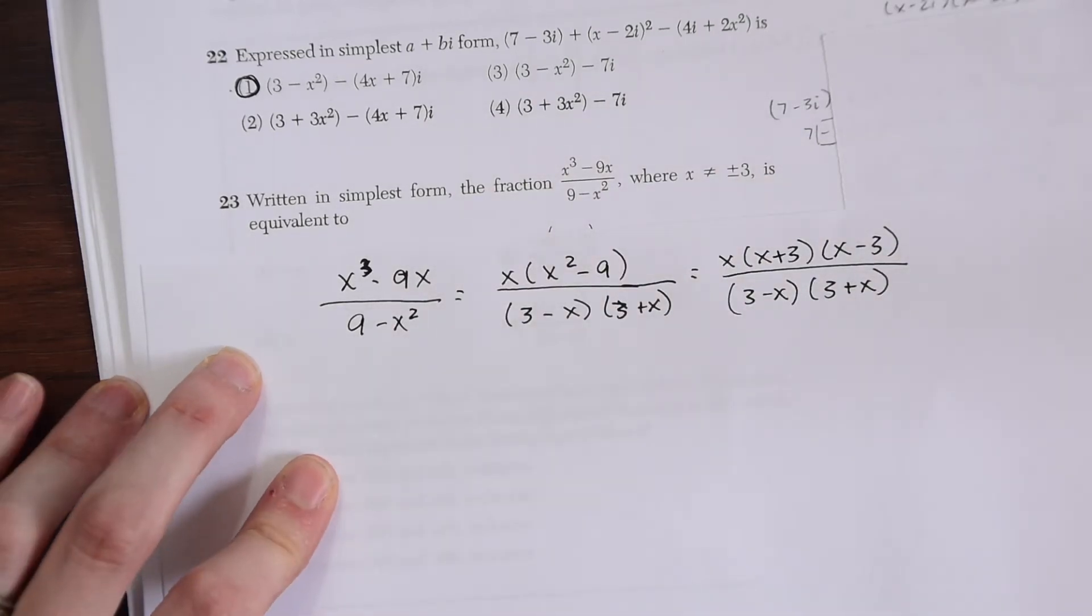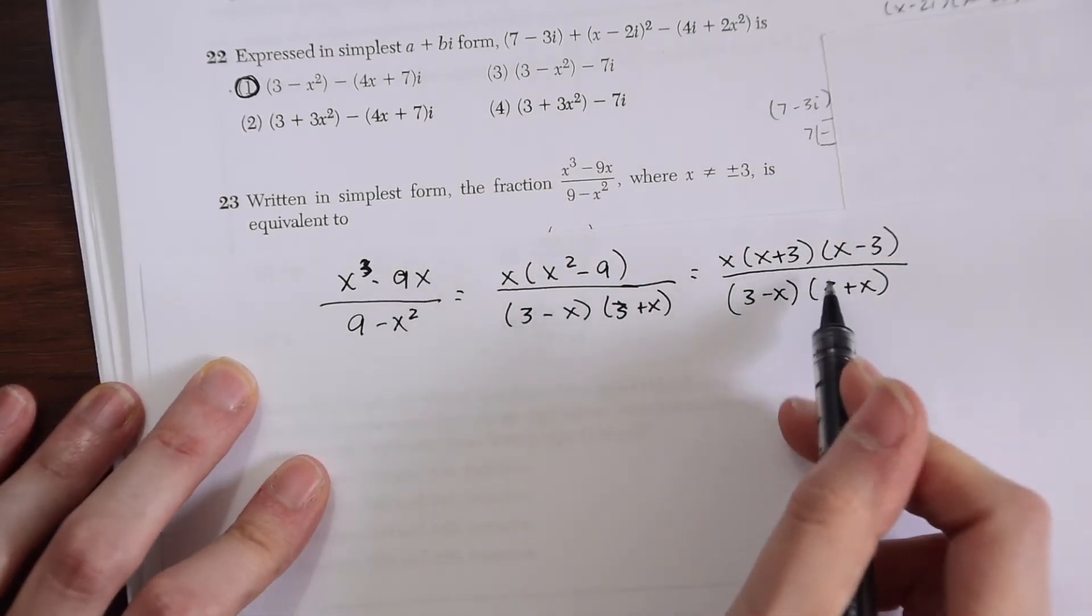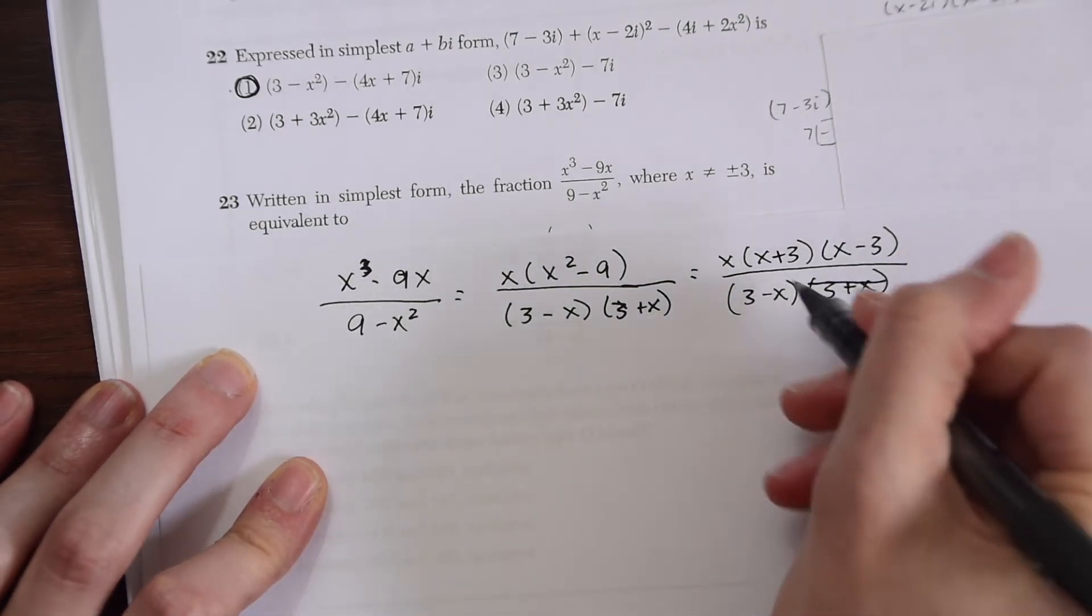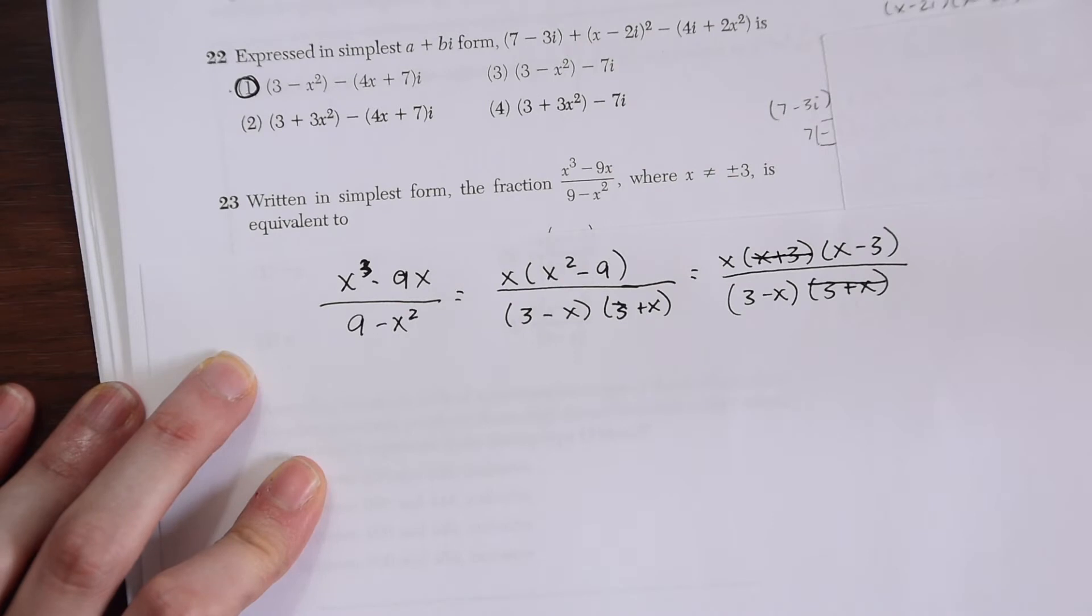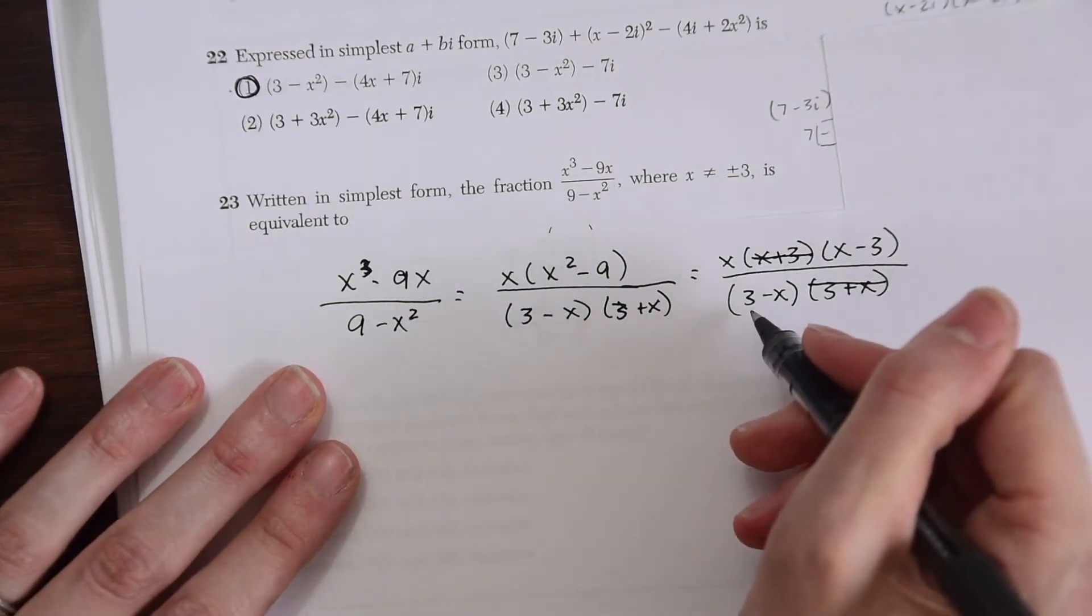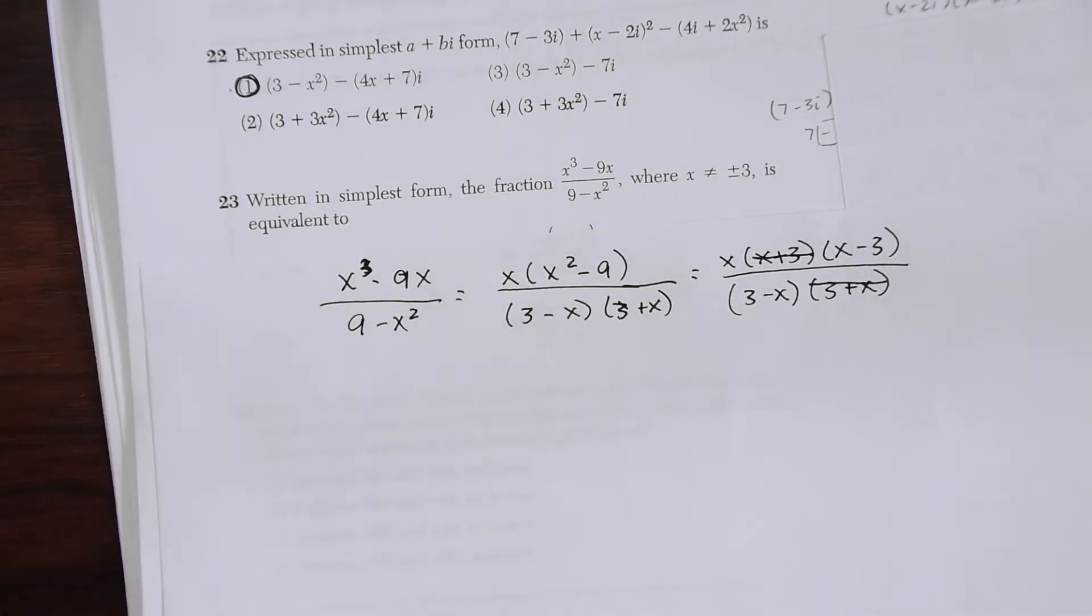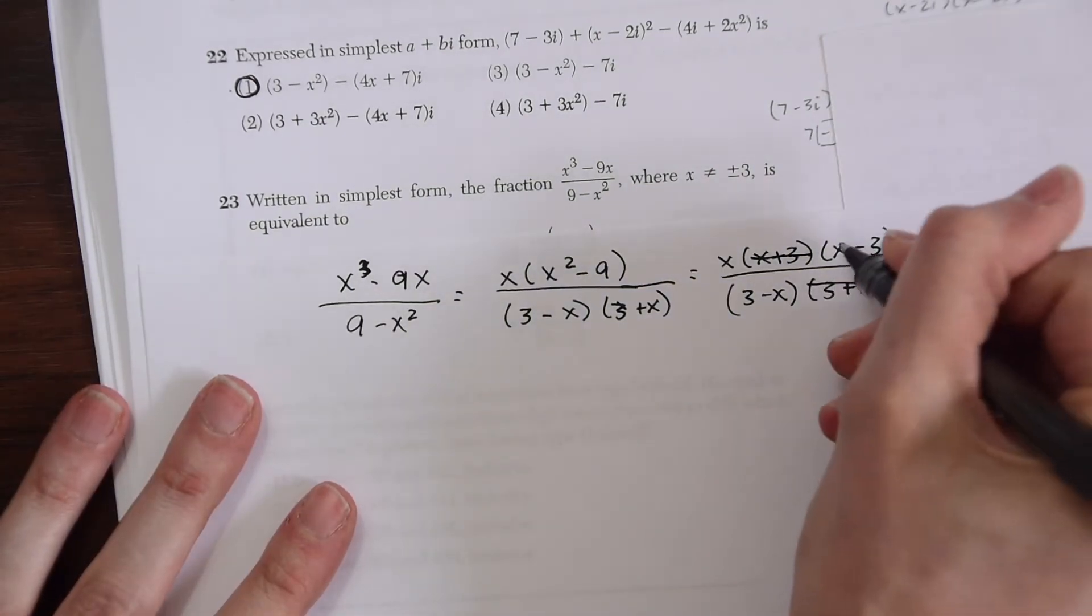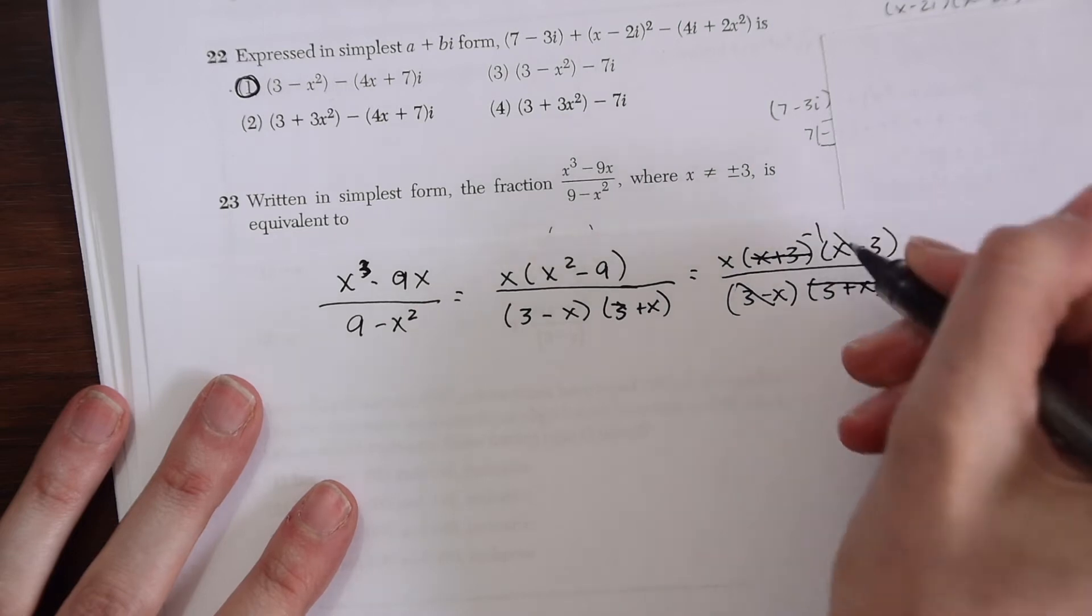Here we can cancel things out because we have x plus 3 and 3 plus x, so we know those are interchangeable with each other. Then we have x minus 3 over 3 minus x. These actually cancel out to be negative 1 when they're on top of each other like this.